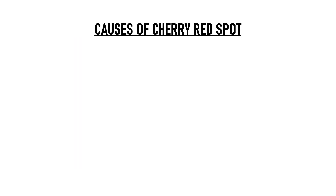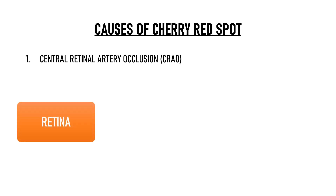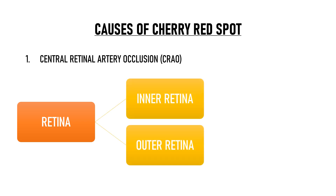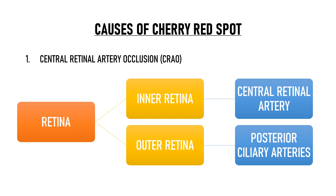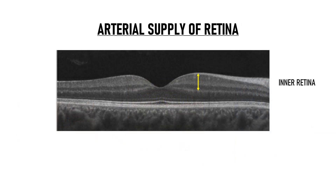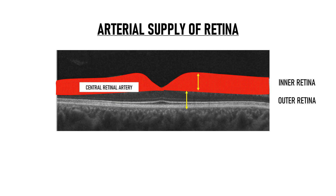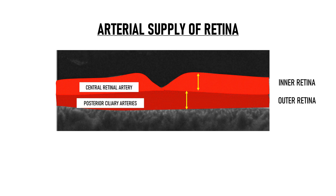The first and most important cause of cherry red spot is central retinal artery occlusion, or CRAO. Retinal layers can be divided into two parts: inner retina and outer retina. Blood supply of the inner retina comes from the central retinal artery, while the outer retina is supplied by the posterior ciliary arteries — the long and the short posterior ciliary arteries — through the choroid. The inner retina is supplied by the central retinal artery, and the outer retina by the posterior ciliary circulation.